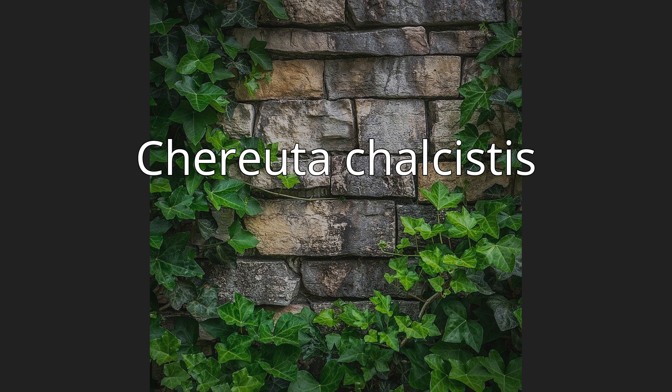Chayuta chalcystis is a moth in the family Xylorytidae. It was described by Edward Meyrick in 1906. It is found in Australia, where it has been recorded from Western Australia.